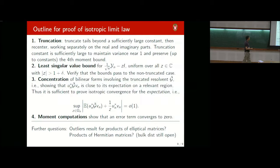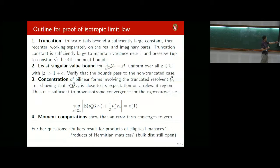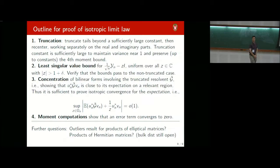Two open questions: first, can this approach be extended to elliptic random matrices? The concentration and moment computation steps used independence heavily, so new ideas would be needed. Second, for products of elliptic matrices where covariance is pushed to one (giving products of Hermitian matrices), can you still prove the mth power of the circular law as the bulk distribution? O'Rourke, Renfrew, Sodin, and Vu handled two Hermitian matrices, but it remains open for three or more.